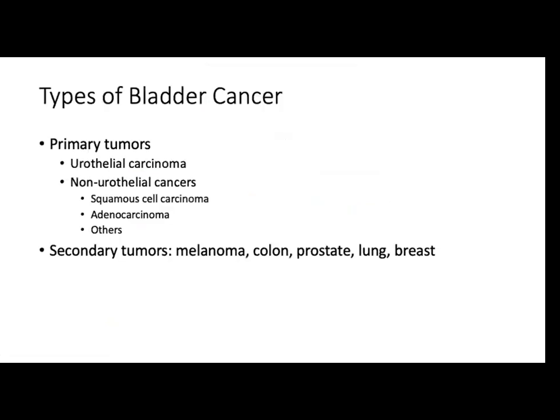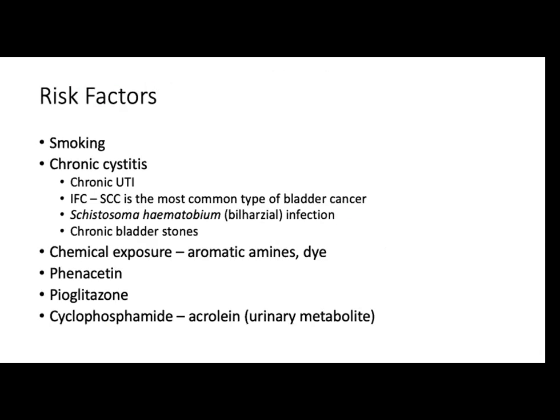What are the types of bladder cancer? Usually your primary tumors — the most common is urothelial carcinoma — and the non-urothelial ones such as squamous cell carcinoma. For secondary tumors: melanoma, metastatic from the colon, lung, and breast.